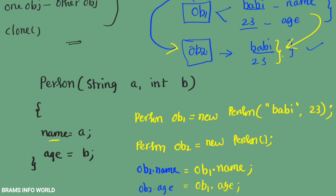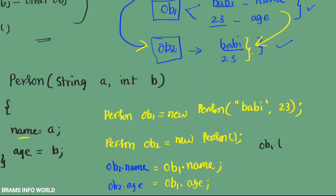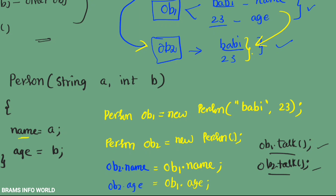This is the concept of copy constructor. We call ob1.talk() and ob2.talk(), so both methods will be called. Find out the notes in the description — for every video you can find the notes there. I hope you understand this topic. You can also find differences between constructor and method, differences between default constructor and parameterized constructor in the notes.